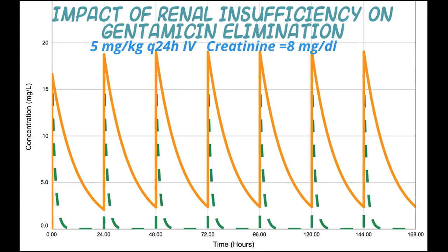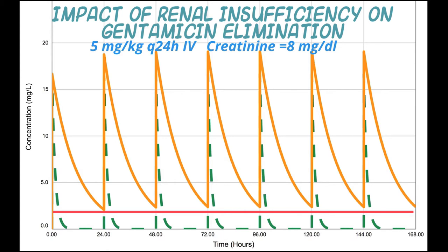With drugs like the aminoglycosides, renal toxicity is associated with drug concentrations in the elimination phase — when urinary concentrations are highest — so the goal is to avoid excessive trough concentrations. The target for gentamicin is anything less than 2 micrograms per milliliter. In the absence of drug concentration data, for drugs primarily cleared by the kidney, changes in creatinine clearance or serum creatinine itself can be used to adjust dosage and/or frequency of administration.